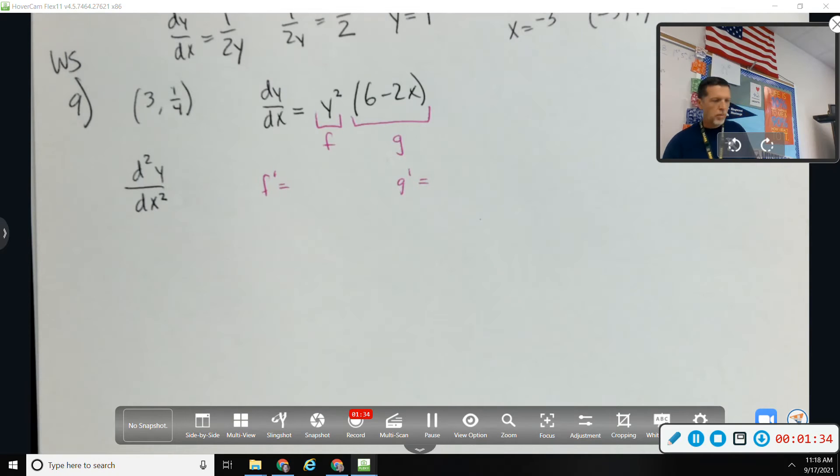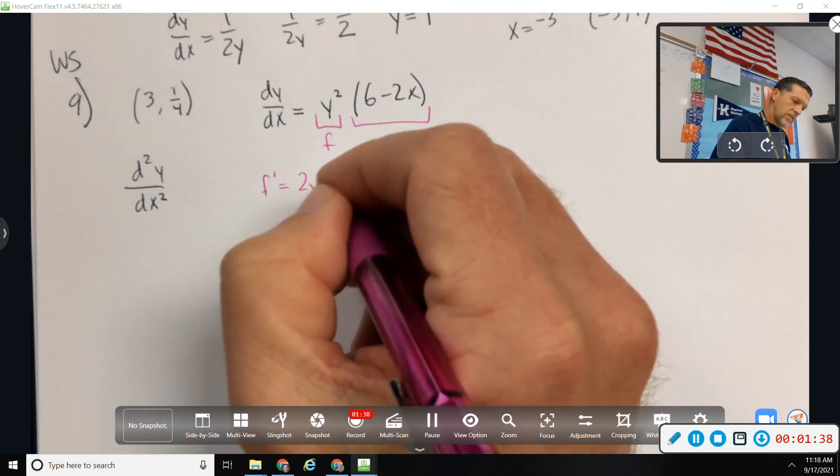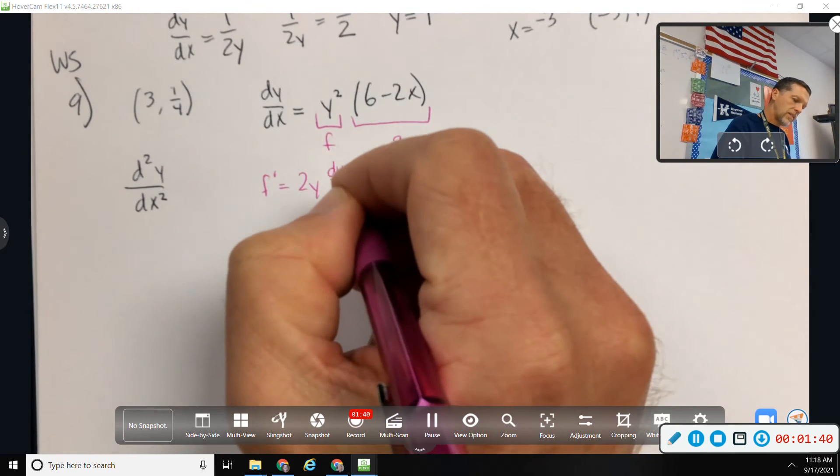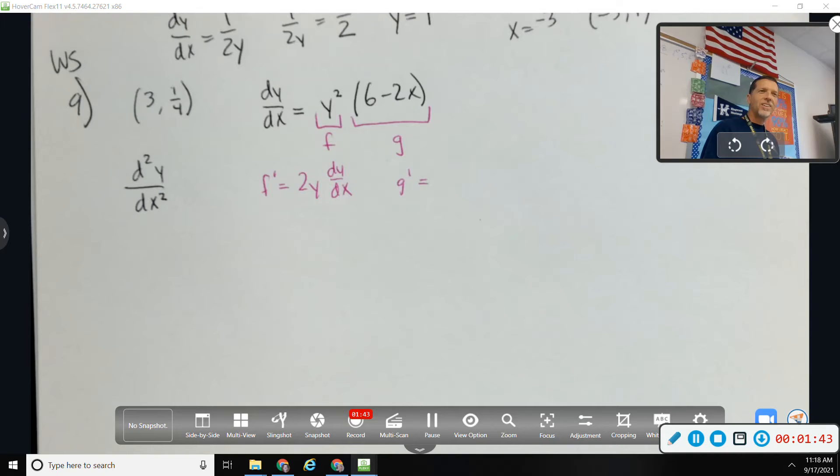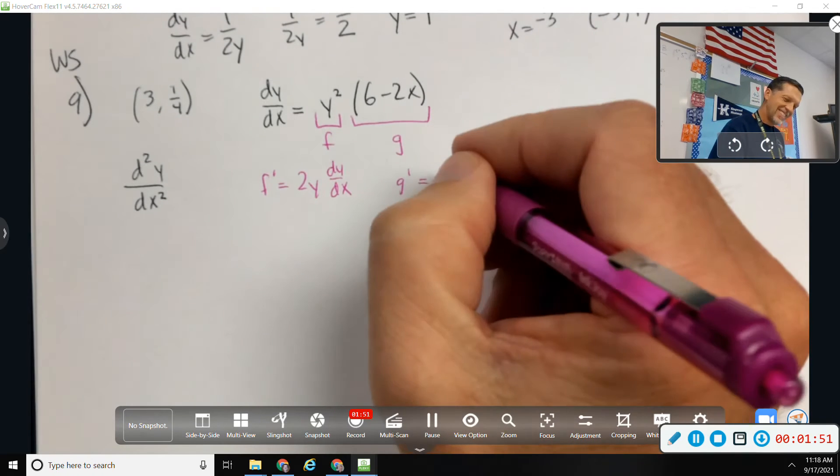So what would f prime be? 2y dy dx. Was that just your attempt to make it onto the video, speak up loud and clear? I can talk louder. How about g prime? Negative 2.